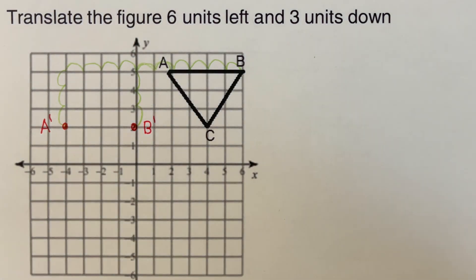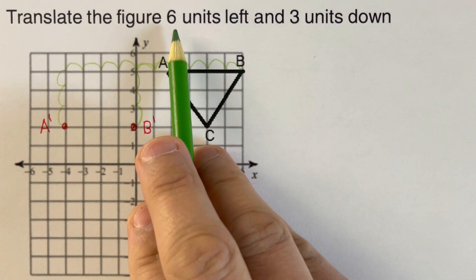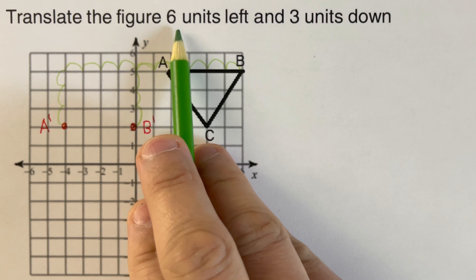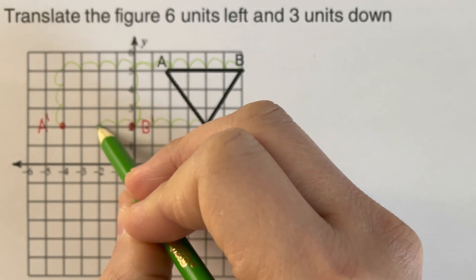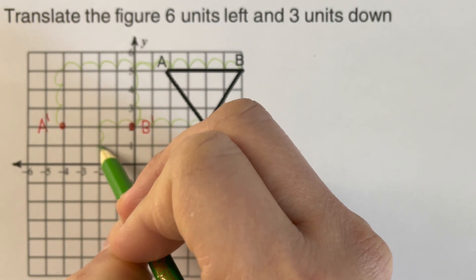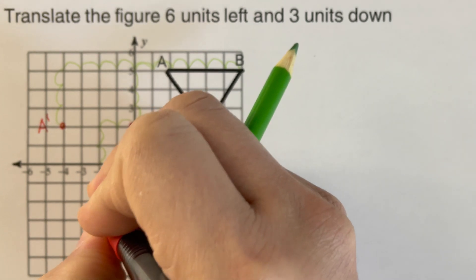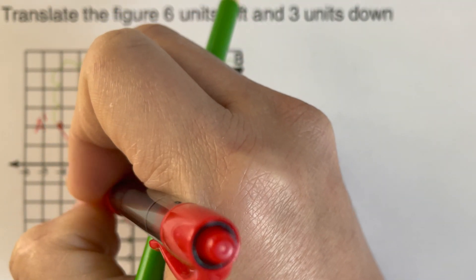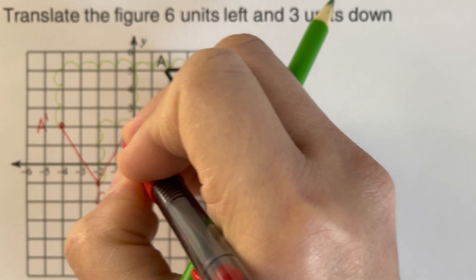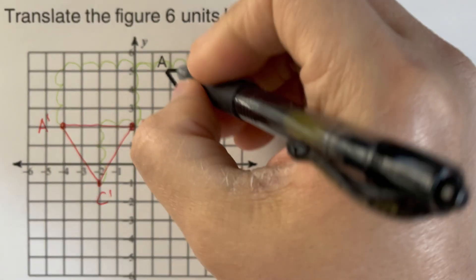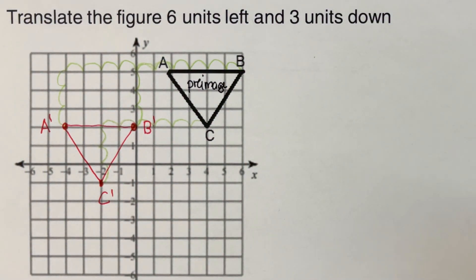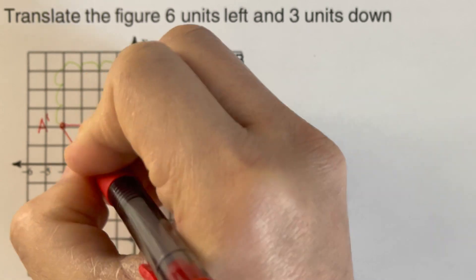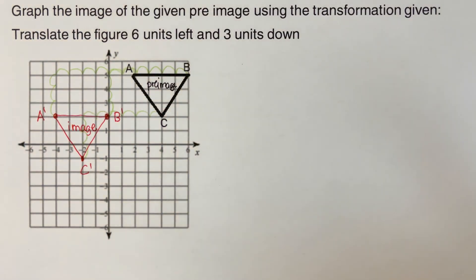And our C prime is the same thing. Each point shall be translated six units left and three units down: one, two, three, four, five, six, and three units down: one, two, three. So this is where our C prime is going to sit. So then this is our image. We remember that the original picture is named as the pre-image — the original figure — and the translated figure is called the image, so that we can go ahead and determine the coordinates of the image.